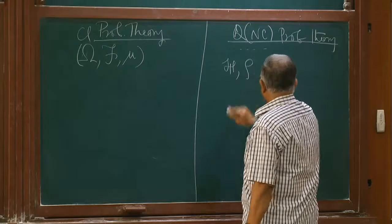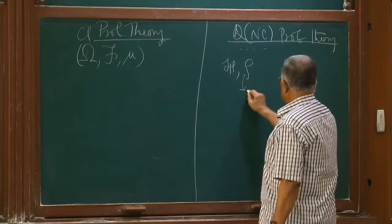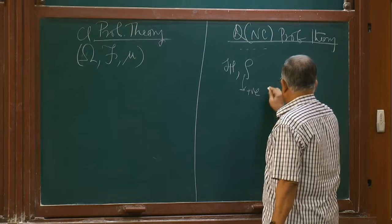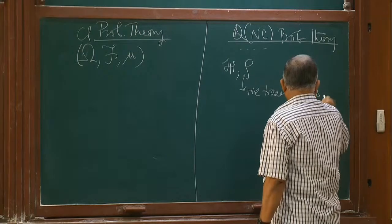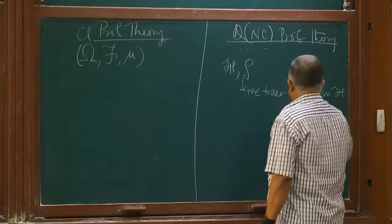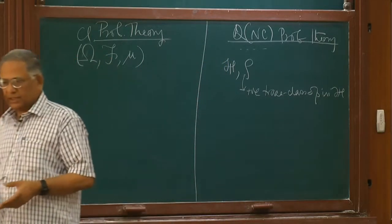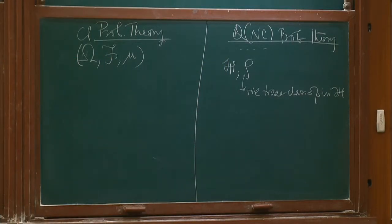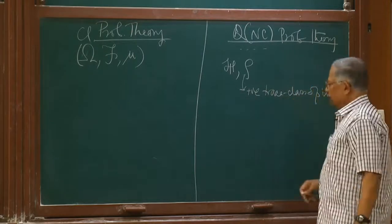So what does that get replaced by here? The outcome is: you have a Hilbert space, which I will always designate as script H. In some sense, omega F gets replaced by this Hilbert space. That's a very strange replacement, but that's the way it is. Mu gets replaced by something which I will designate as rho.